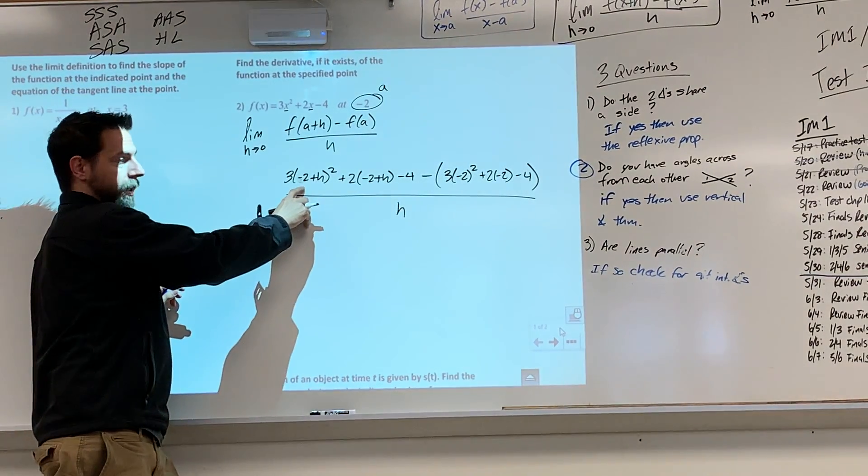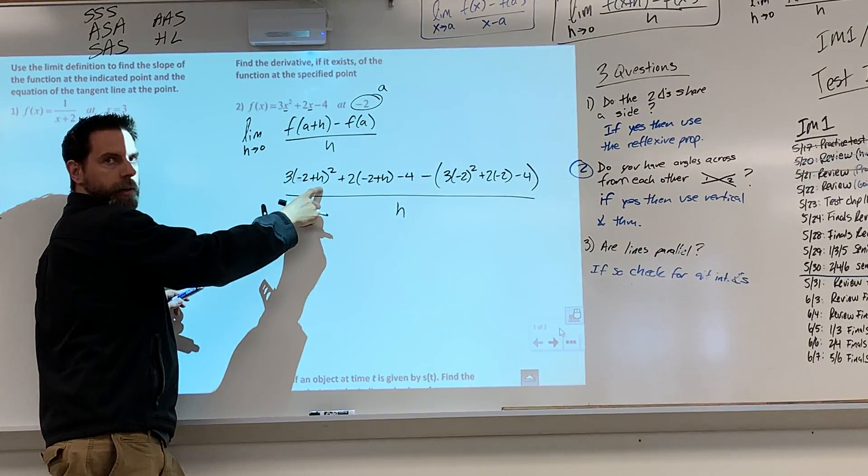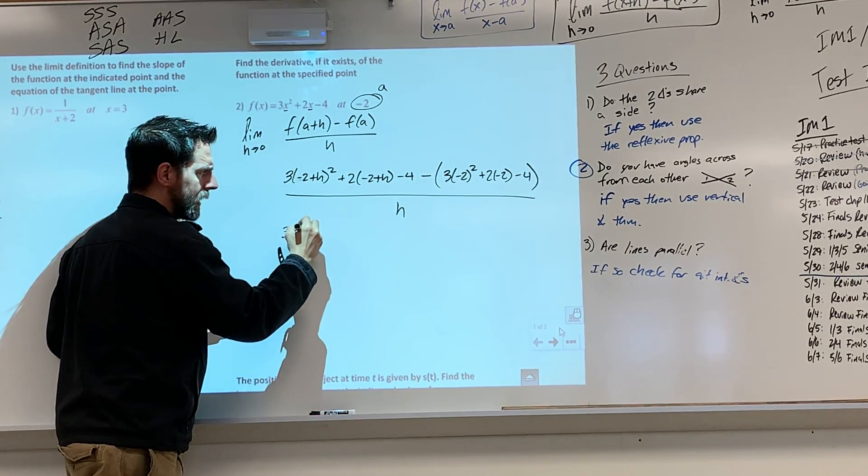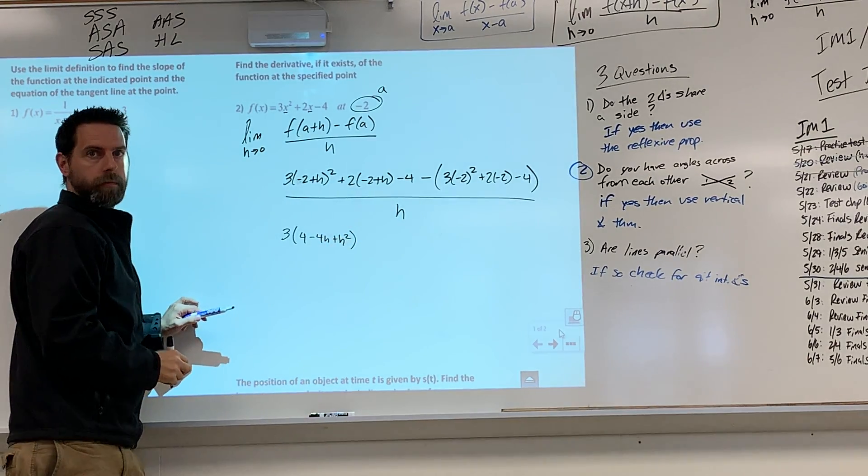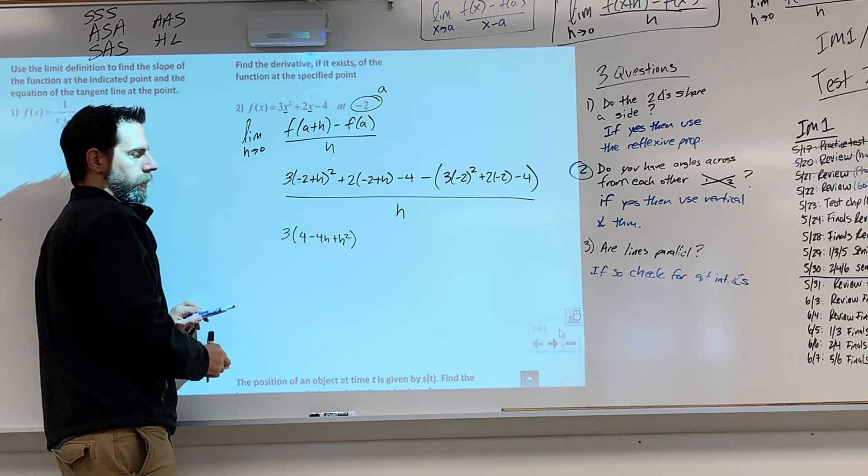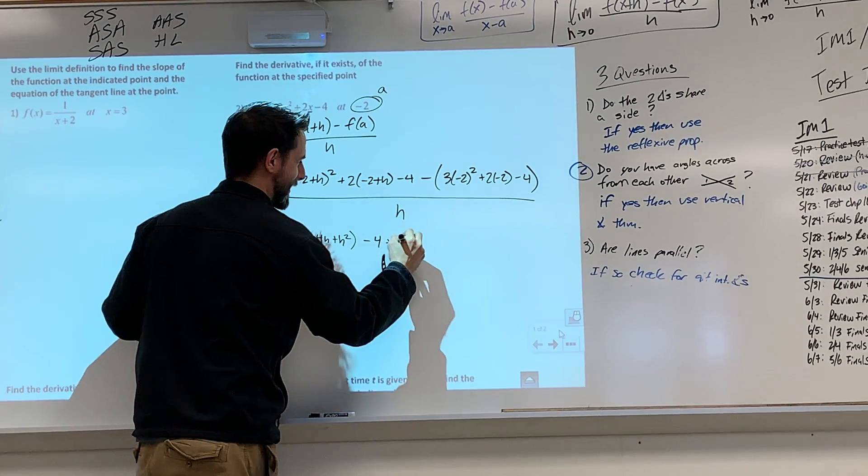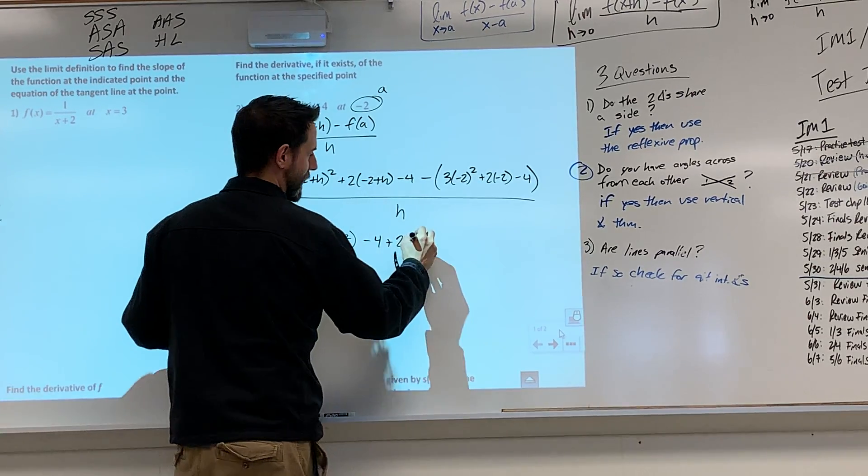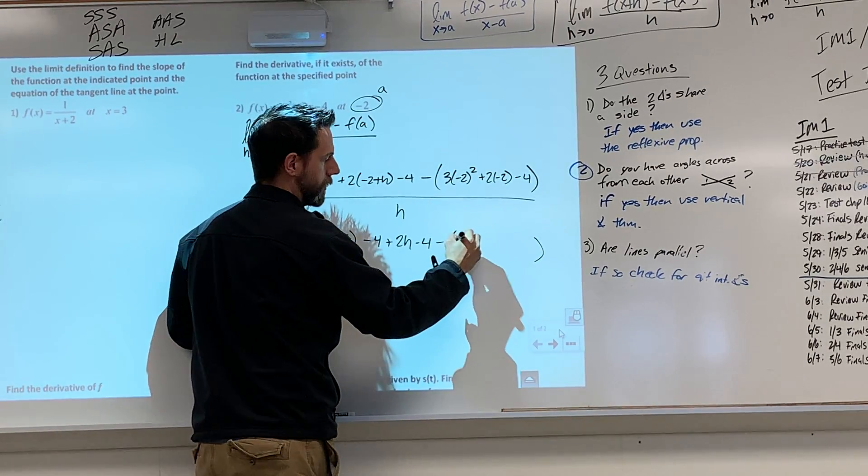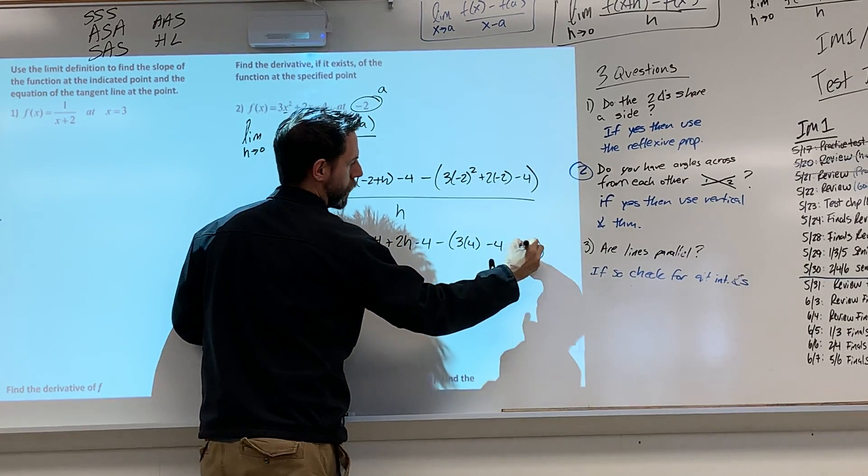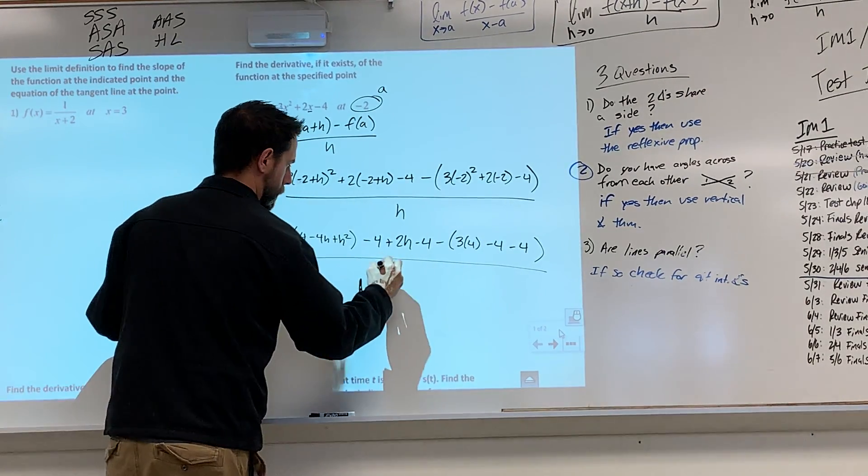It's right here, guys. The big thing that I want to see is the fact that you actually foil this correctly. This is not 4 plus h squared. It's 3 times 4 minus 4h plus h squared. So right here, we got this minus 4 minus this entire answer over here guys. And so we look at this right here. This will be 3 times 4 minus 4 minus 4. So wouldn't that just be 4? Yep.